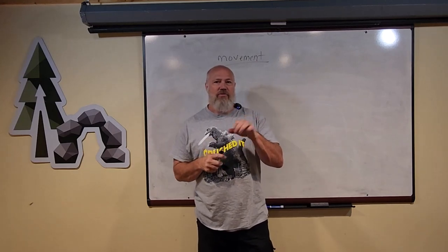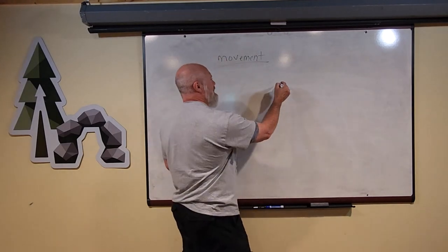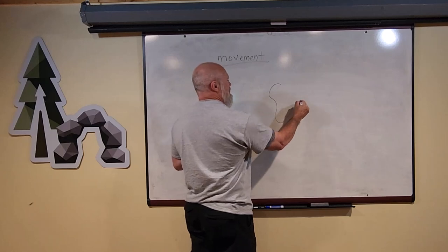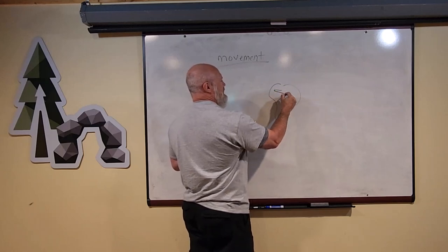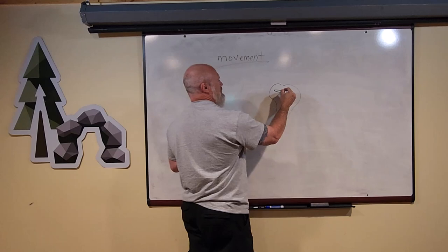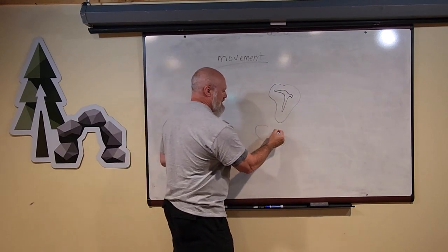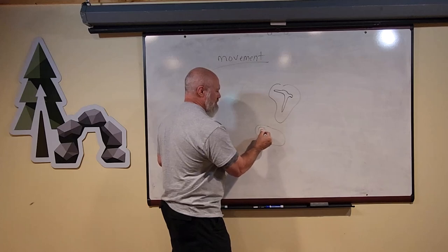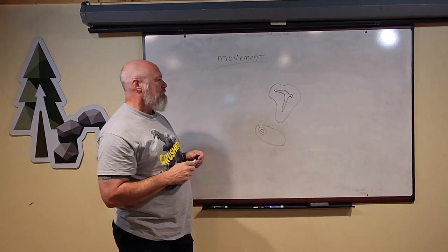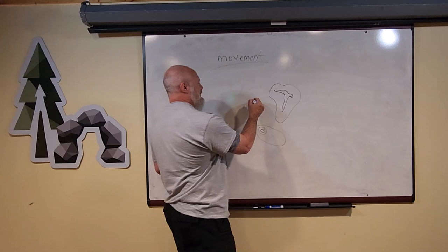If you've ever eaten a chicken leg or some steak or ham, you see sometimes there's a bone in that. Sometimes you have a steak and in the middle there's a bone, like a T-bone steak. Or sometimes you get a piece of ham with your breakfast and there's a little round bone in the corner.